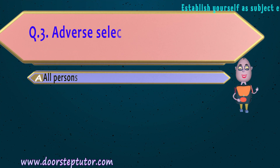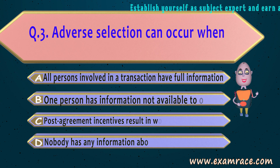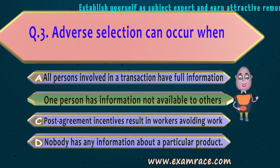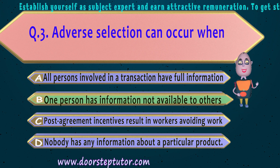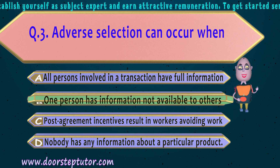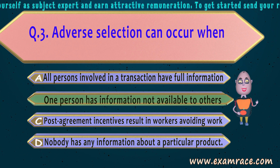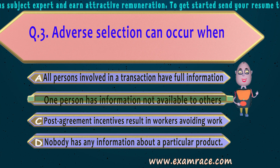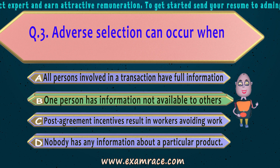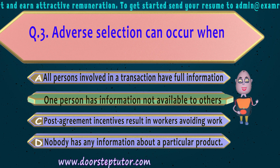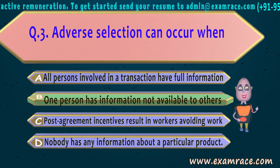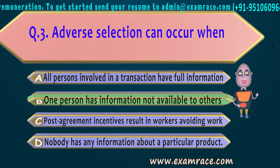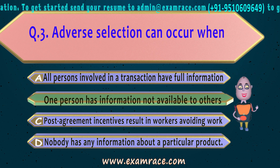The next question: adverse selection can occur when one person has information not available to others — that is option B. Adverse selection occurs when the insured person has more information that has not been disclosed to the other party, that is the insurance company.